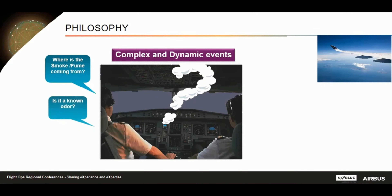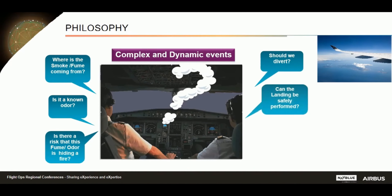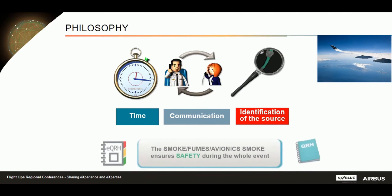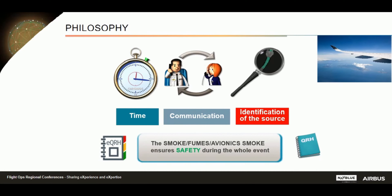It is really important to understand that any fire, smoke, or fume event is a complex and dynamic one. Complex because at the time the event starts, you most often don't know what is going on, yet you must quickly analyze the situation and take appropriate decisions. Dynamic because the situation may escalate quite quickly if key actions are not taken early enough. That is why in any smoke-related event you will face three challenges: time, communication, and identification of the source. Our smoke procedure has been designed to tackle all three.